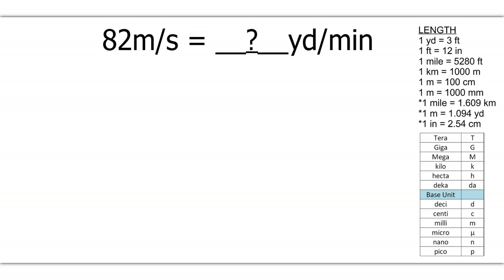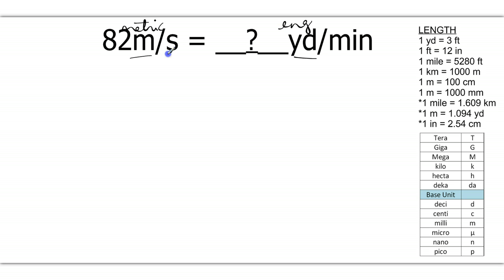We are given 82 meters per second and need to convert to yards per minute. You're dealing with two independent variables. We have meters, which is a length — we're going to convert that to yards. Meters is metric and we're going to go to yards, which is English. In the denominator we have a time: seconds is going to change to minutes. So you're going to convert two different units simultaneously. We want to rewrite our given in a way that's more user-friendly with dimensional analysis.